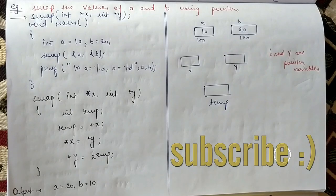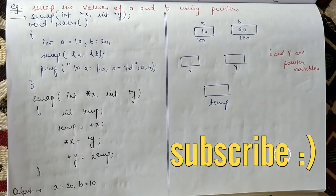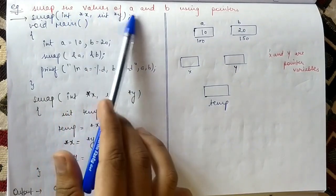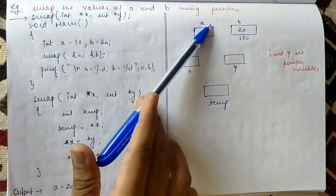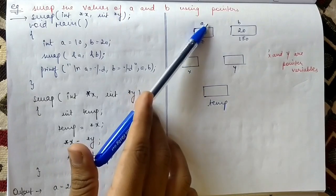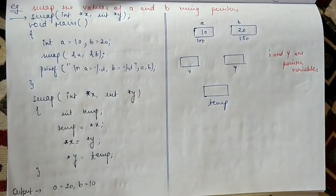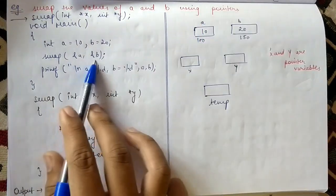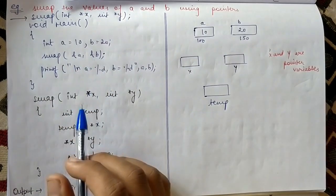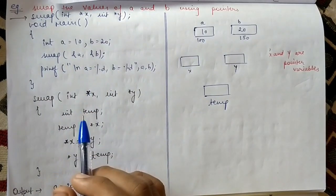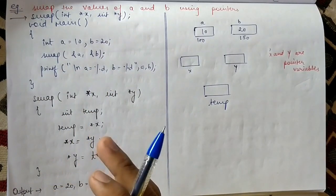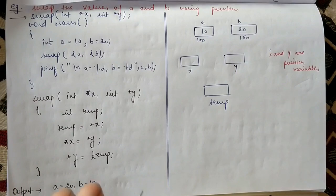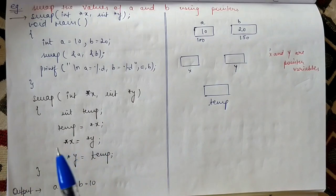Hello guys, welcome to my channel. My name is Abhishek and today we'll learn how to swap the value of a and b using pointers. Generally, if we swap the values without sending the address, the value of a and b will not get swapped — they'll remain the same.